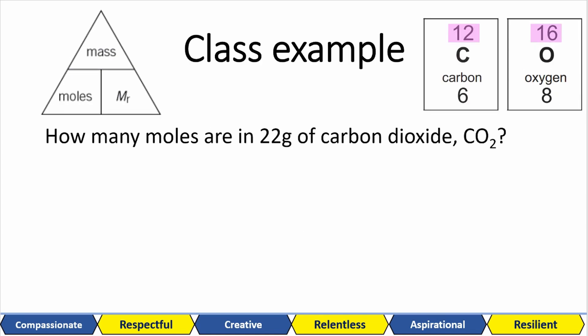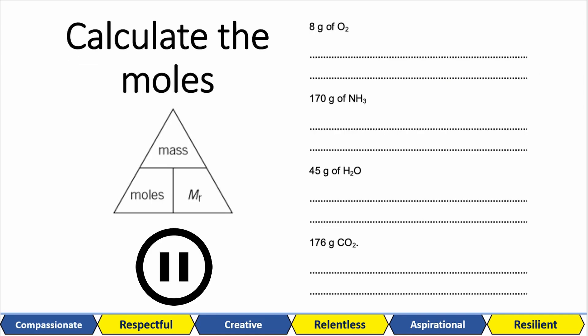Here's another example. How many moles are there in 22 grams of carbon dioxide? Moles is mass over MR. The mass is 22, so that goes on top. We find that the molar mass, which is our relative formula mass of 44. 22 over 44 gives us 0.5 moles. Now, have a go at these examples. Pause, attempt, and then play. Here are the answers.